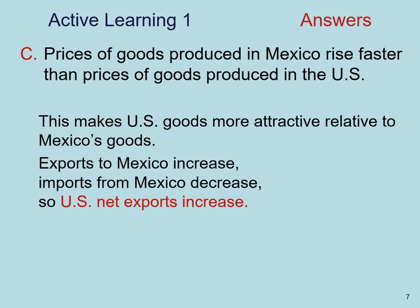And lastly, let's think about scenario C. Prices of goods produced in Mexico are rising faster than prices of goods produced in the United States. Well, in this case, that would make U.S. goods more attractive relative to Mexico's goods because they're becoming cheaper over time. If that's the case, we would expect exports to Mexico to increase. And at the same time, because the prices of goods and services in Mexico are rising, that also means they're relatively more expensive in the U.S., leading to a reduction of imports from Mexico into the United States.